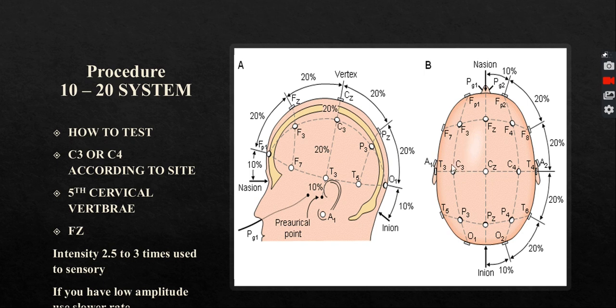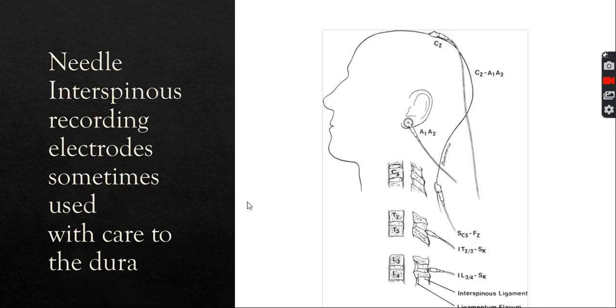The first recording active electrode will be in C3 or C4 according to which side you're stimulating. The second active recording will be in the fifth cervical vertebrae. The reference will be in the FZ point, and the stimulation intensity will be up to 50 milliamp, which is actually more than enough. Other texts say between 2.5 to 3 times the intensity needed to stimulate the sensory nerve. Others say until you see a flicker contraction. According to Harvard Medical School, if you use an intraspinous needle recording electrode and go through the intraspinous ligament with care to the cord, to the dura and the subarachnoid space, sometimes they use the needle recording electrode to get better impulses and better amplitude.